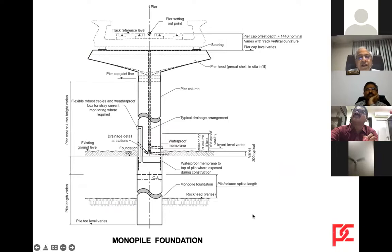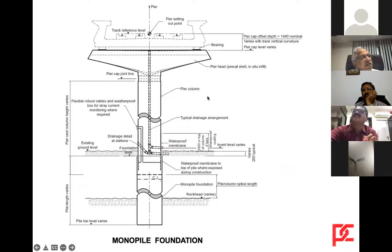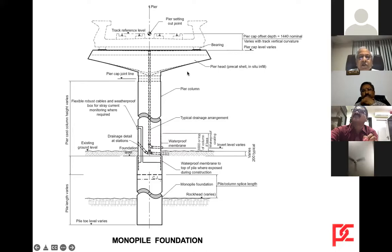The monopile foundation is where the whole structure is supported on one single pile of about two to two-and-a-half meters diameter. These are not used much in river bridges, but mostly in flyovers, city flyovers, and metros. The whole of the Dubai Metro structure is supported on a single pile of two-and-a-half meter diameter.